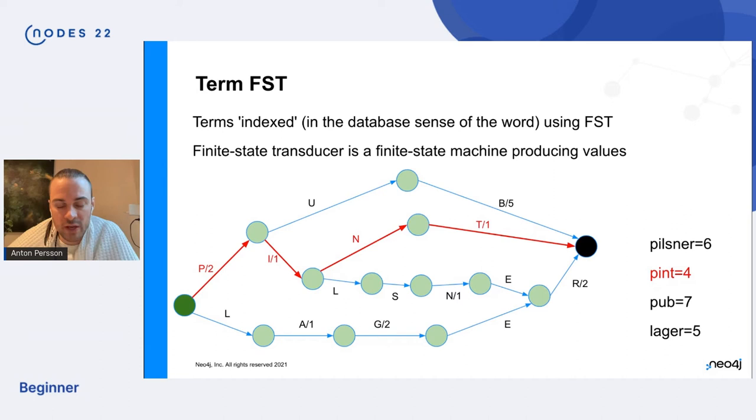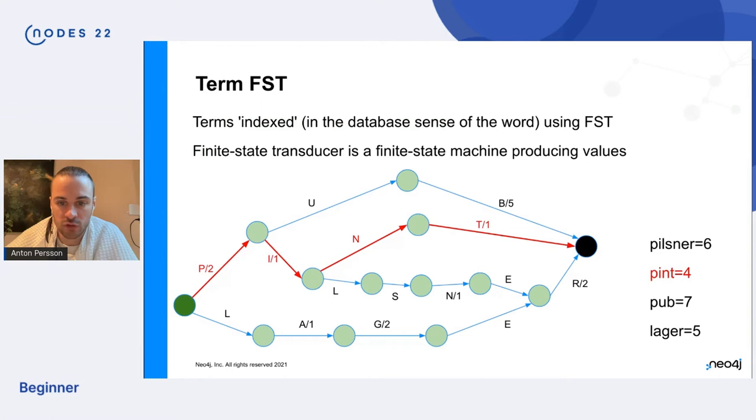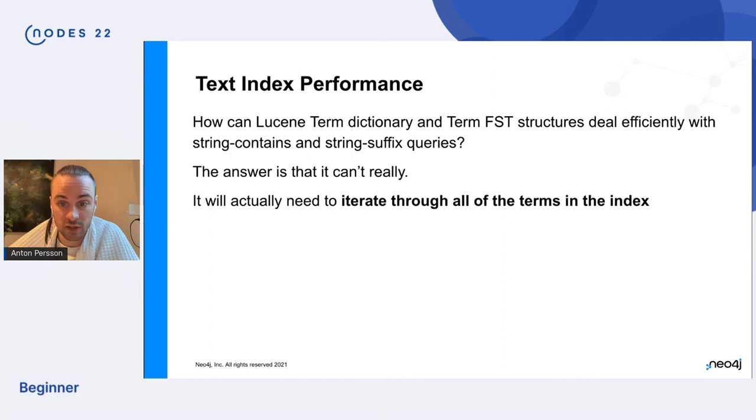Okay. So we have the term dictionary and we have this finite state transducer thing that we can search in, but how can we support contains and suffix query inquiries in this structure? See the finite state transducer always start with the beginning of the word. So how can we search for like internal strings here? That seems crazy. And it is, it can't, it doesn't actually support this kind of queries.